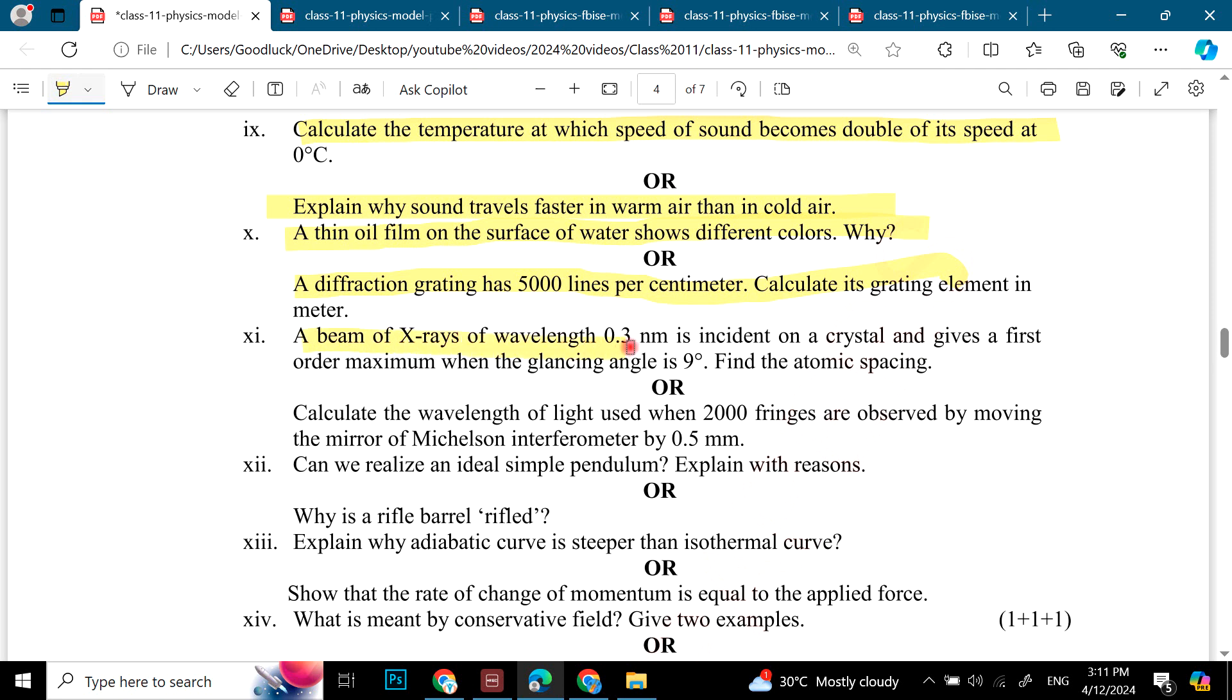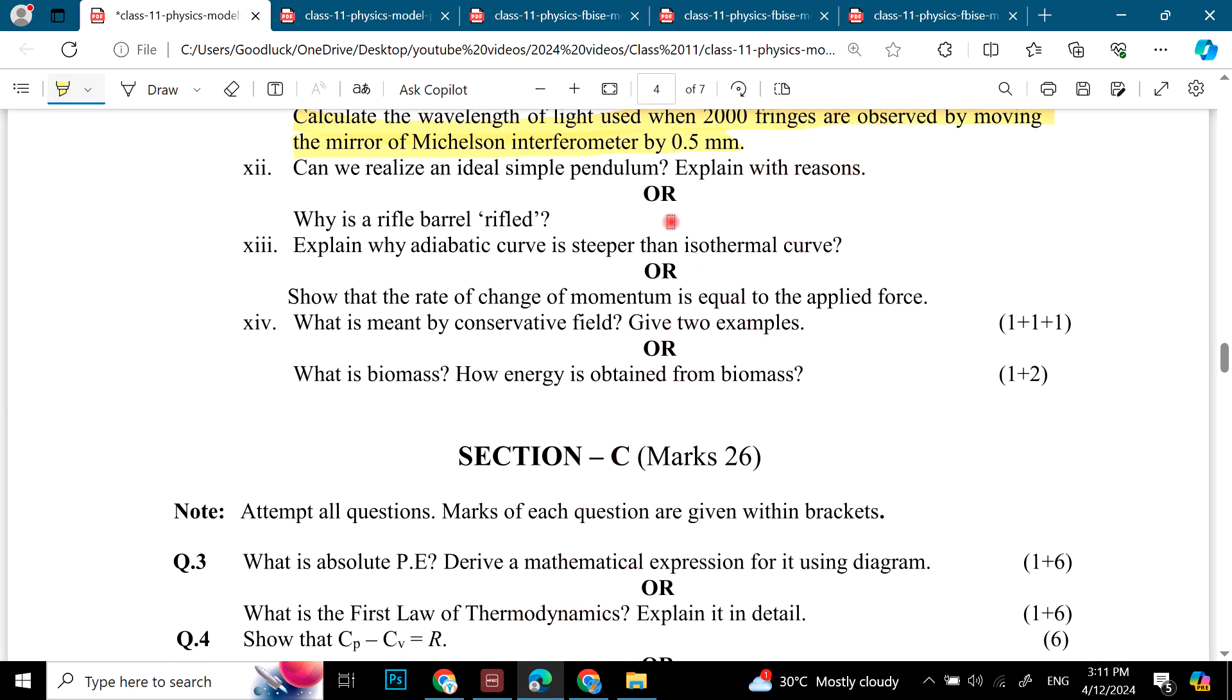A diffraction grating has 5000 lines per centimeter, calculate grating element. A beam of X-ray of wavelength 0.3 nanometer is incident on a crystal and gives a first order maximum when the glancing angle is 9 degree. Find the atomic spacing. Calculate the wavelength of light used when 200 fringes are observed by moving the mirror of Michelson interferometer to 0.5 millimeter. Can we realize an ideal pendulum? Explain the reason. Why is a rifle barrel rifled?